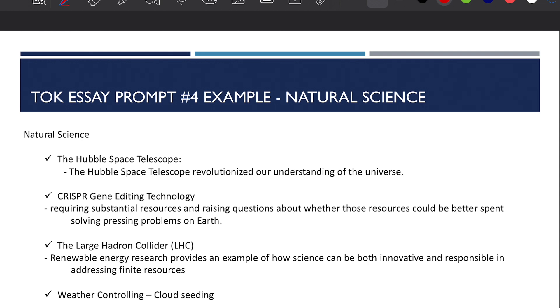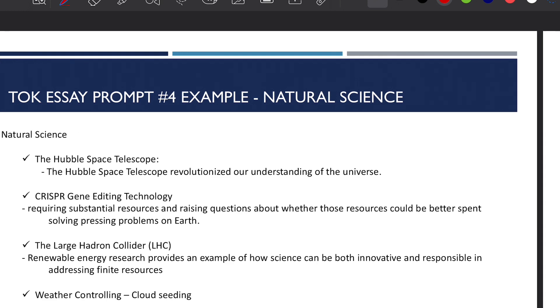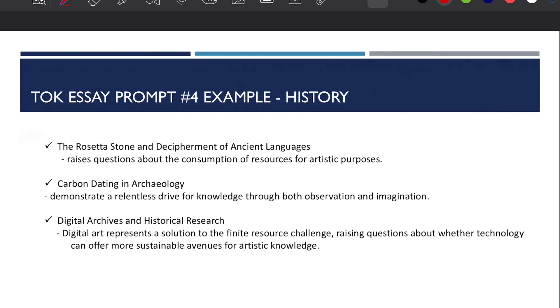Finally, let's talk about the examples of the natural science. The first example is the Hubble Space Telescope. We all know that the Hubble Space Telescope revolutionized our understanding of the universe. And then the second one is CRISPR gene editing technology, and third one is the Large Hadron Collider, and weather controlling cloud seeding program that we use these days to control our rain system or the droughts. And then for the history, you can use examples such as the Rosetta Stone and the Asian languages, and carbon dating in archaeology, and digital archives and historical research. So that's it for this video and I will come back with the next title.